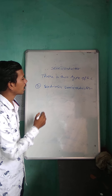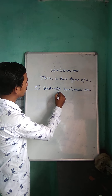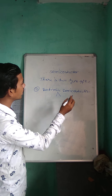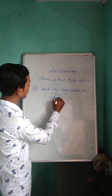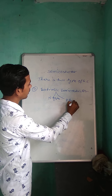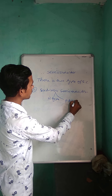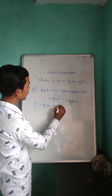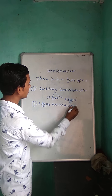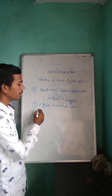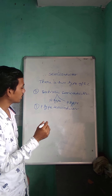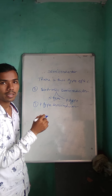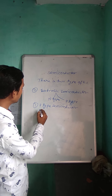Extrinsic semiconductors are pure semiconductors. There are two types of semiconductor: P-type semiconductor and N-type semiconductor. P-type semiconductors are trivalent semiconductors.